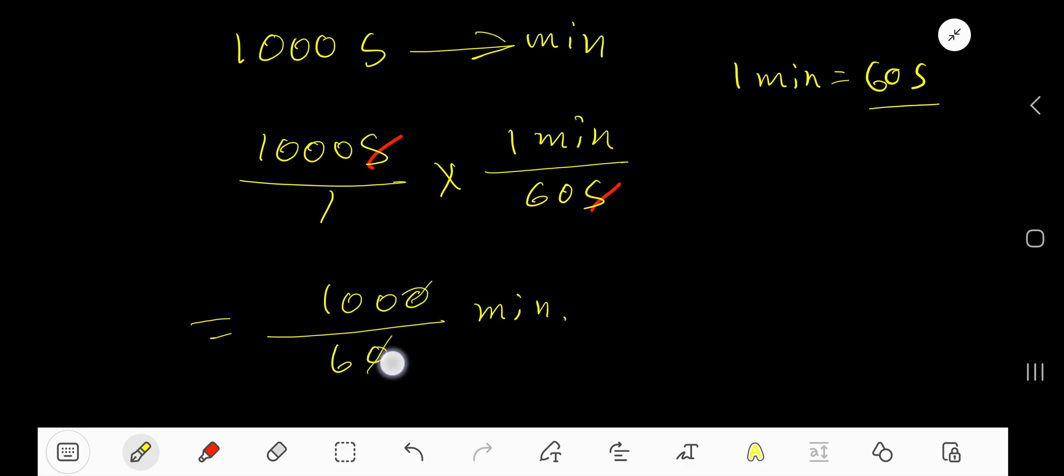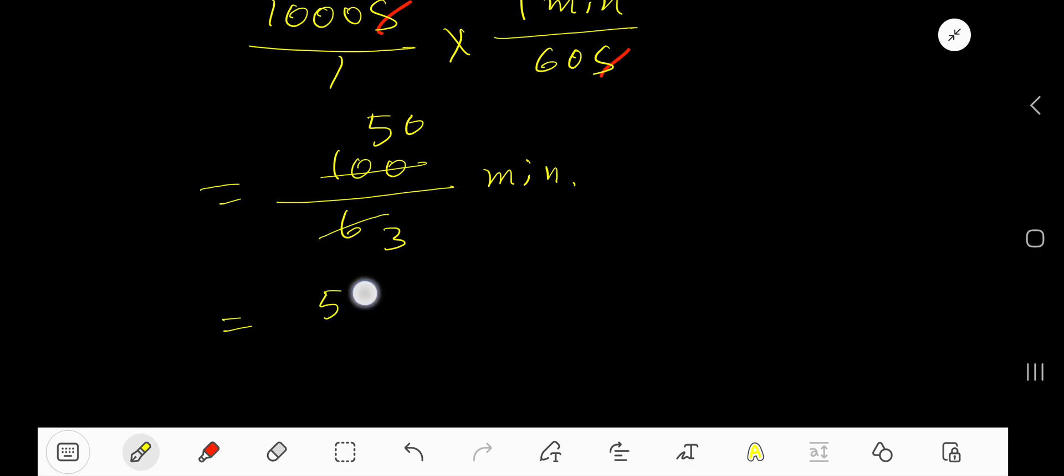Cancel this zero, this zero. Now divide this 6 by 2, you will get 3. Divide this 100 by 2, you will get 50. So 50 divided by 3 minutes.